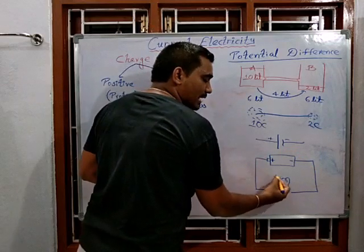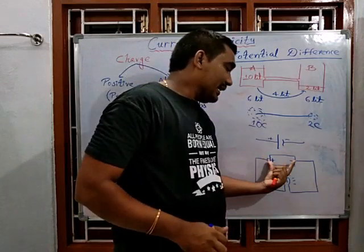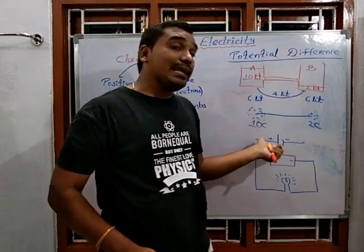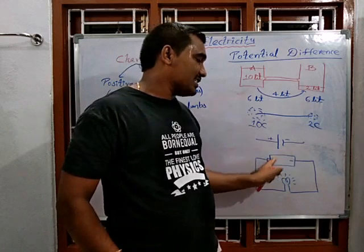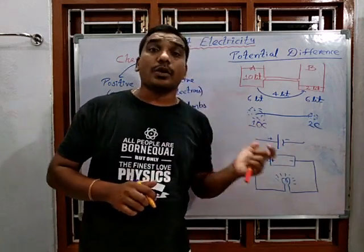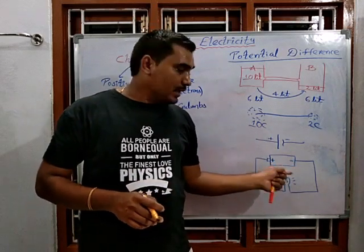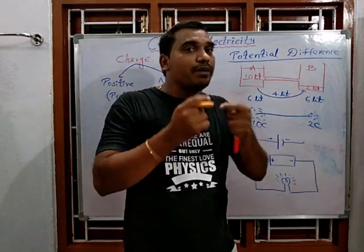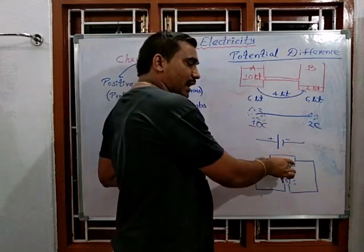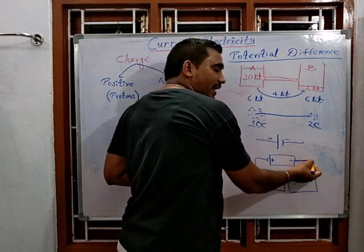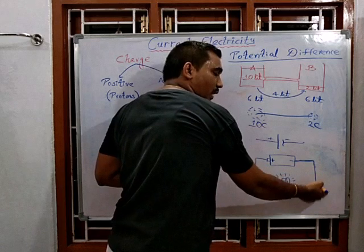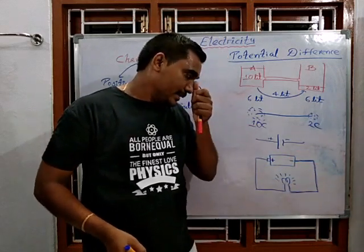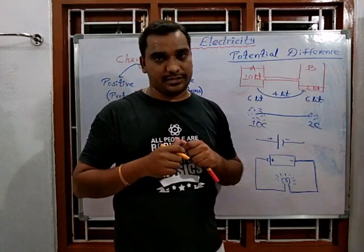This is the symbol for the bulb. If the circuit is closed, the bulb will naturally glow. The cell creates a potential difference in the circuit, and the potential energy due to the electrons flowing through the connecting wire is converted into heat and light energy.